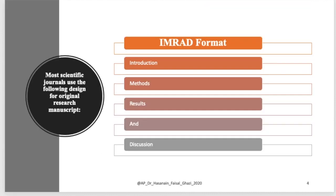Most scientific journals follow the design which is called IMRAD, which stands for Introduction, Method, Result, and Discussion. This is the most commonly used format in scientific publications.